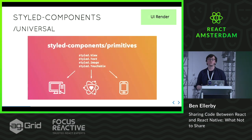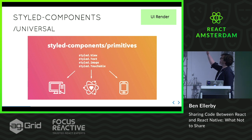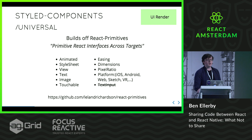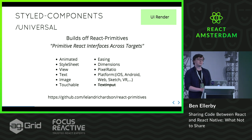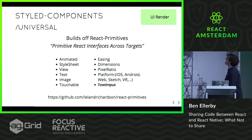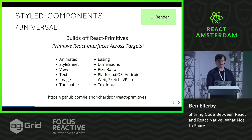Styled components universal was a branch of this which tried to tackle the problem of different render environments — renamed to styled components primitives — having primitives that can be shared across render environments. So here we've got going to web, going to Sketch — which is a really interesting way you can interact with designers — and going to React Native. It builds off a library called React Primitives, which is primitive React interfaces across targets. You can see it has quite an extensive list of supported components, though there are some notable exceptions such as text inputs, because the variance between web and native makes inputs a more complicated thing to share.